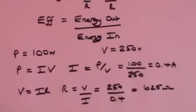And you'll recall that, of course, because it's a filament bulb, that resistance will increase as it gets hotter. But initially, it's 625 ohms.